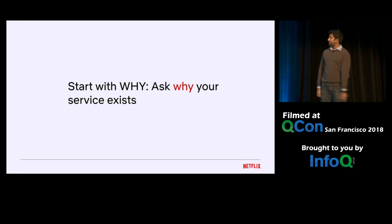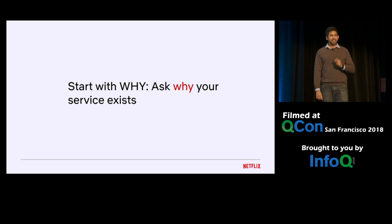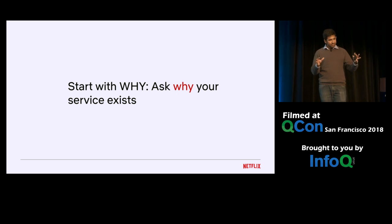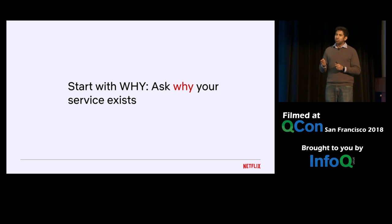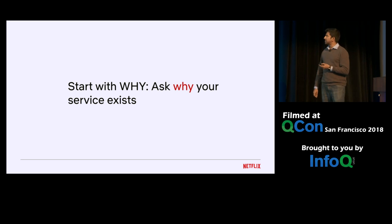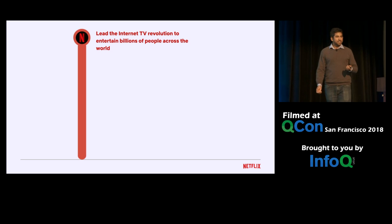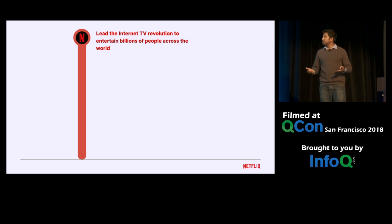Let's begin with identity. Start by asking why. Why does your service exist? If you remove your service from your ecosystem, what would be the impact? Go a step further and ask why your service exists with respect to why your company exists. Why does Netflix exist? Netflix's goal is to lead the internet TV revolution and entertain billions of people across the world.